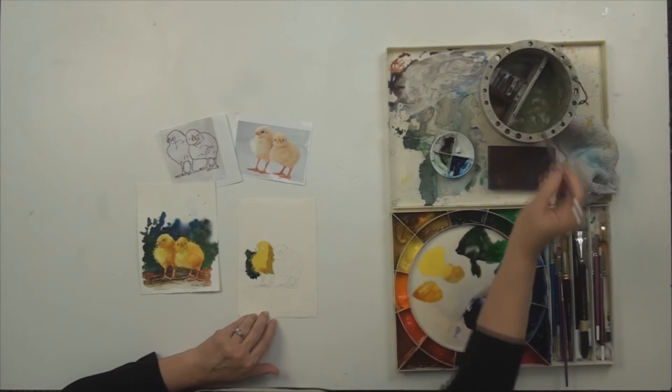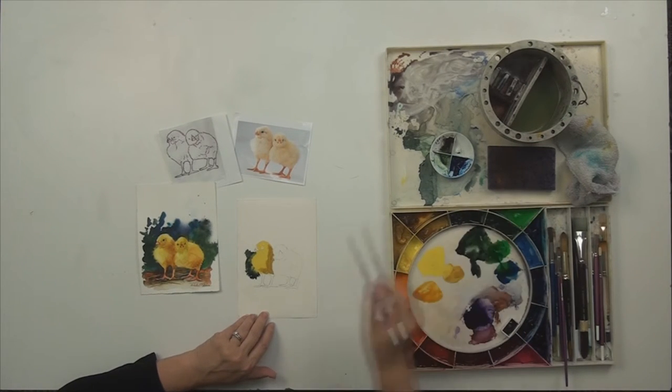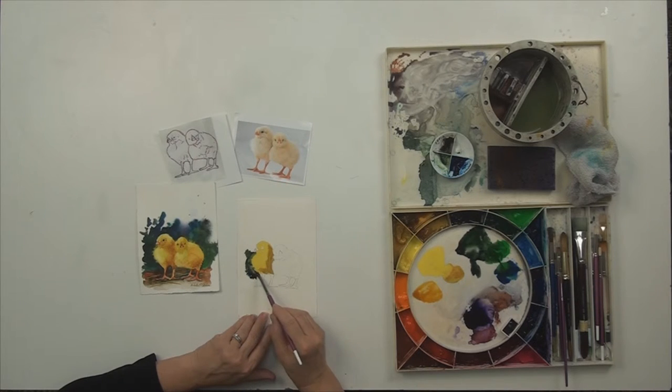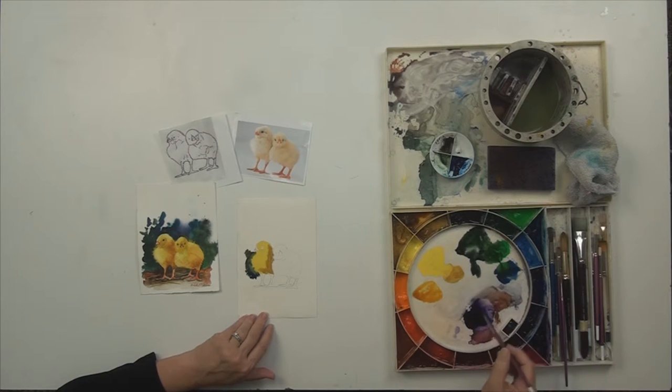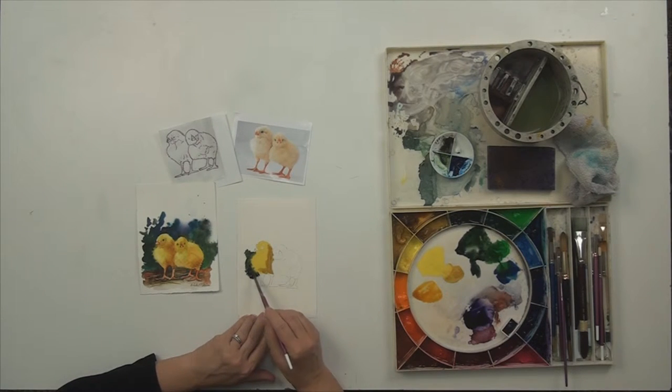It might even be too soft. The wetter your paint is, the hairier your chick will be. You can lift it up and kind of control where you want it to go. You can also go back in and put some other colors back and forth until you're happy with it.